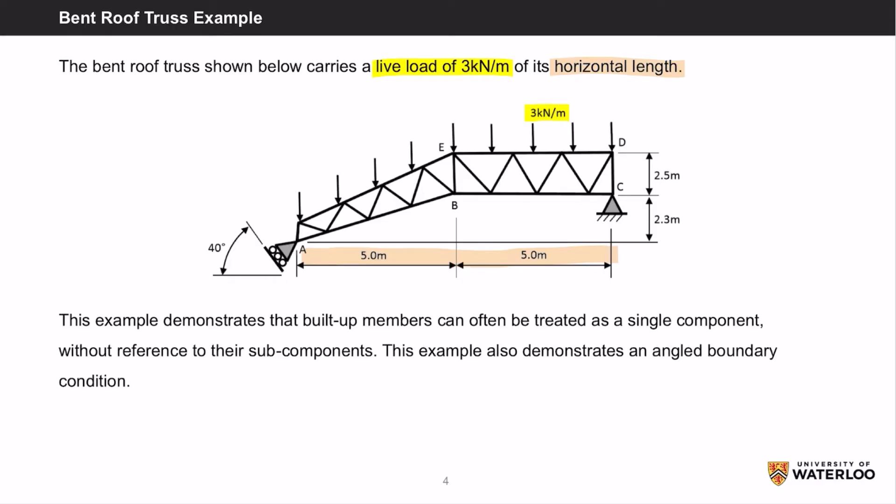This example demonstrates that built-up members, that is, rigid members constructed from various subcomponents, can often be treated as a single component, without reference to the subcomponents. Essentially this is a bent roof truss made up of all these interconnected members, but for the purpose of this analysis, we can just consider it to be a solid block, which will simplify this problem.